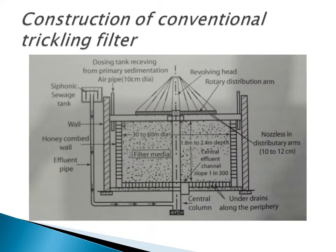Through the nozzles the sewage is spread onto the top of the filter media, and the organisms present in the filter media act upon the organic matter present in the sewage. The organic matter gets oxidized and biomass is produced. The biomass thickness goes on increasing after a period of time, and as the thickness increases the bottom layer will not get sufficient oxygen — it cannot survive for a long period. So the bottom layer gets detached from the filter media. The biomass along with the effluent passes through the under drain. This is the working operation of the trickling filter.